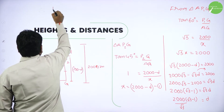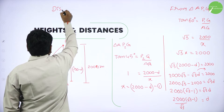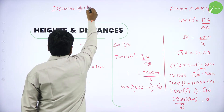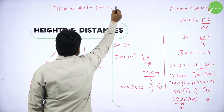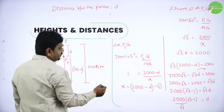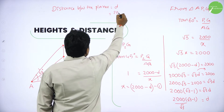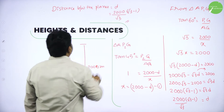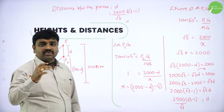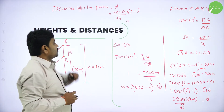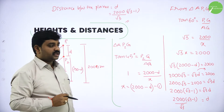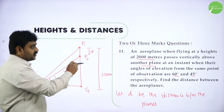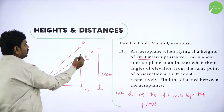So D equals 2000 times (root 3 minus 1) divided by root 3. Therefore, the distance between the planes is 2000(root 3 minus 1) / root 3. We understood the first problem: one plane passes over another, angles of elevation 60 and 45, total height 2000 meters, and the distance between planes is D equals 2000(root 3 minus 1) / root 3.